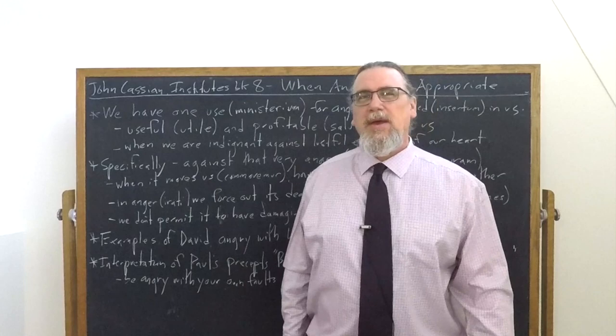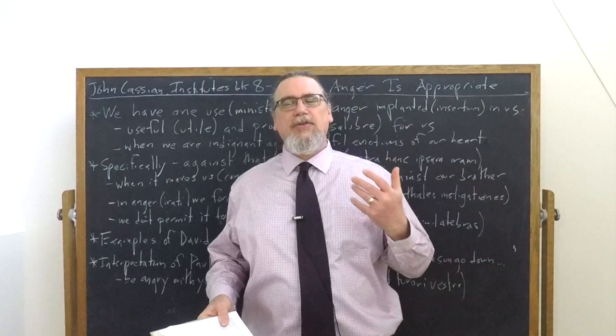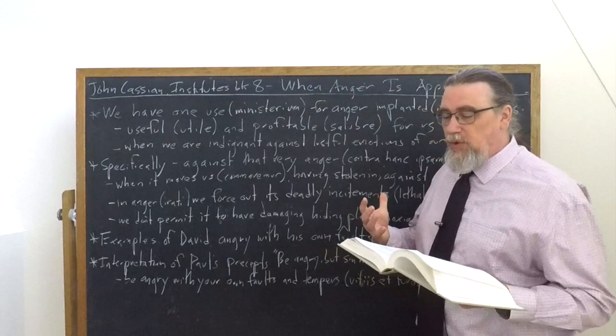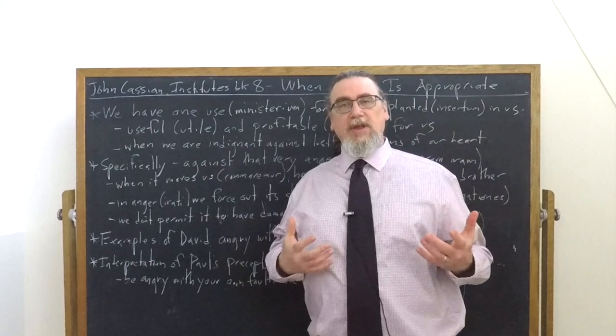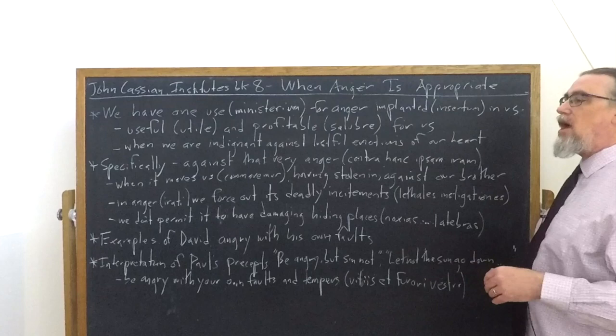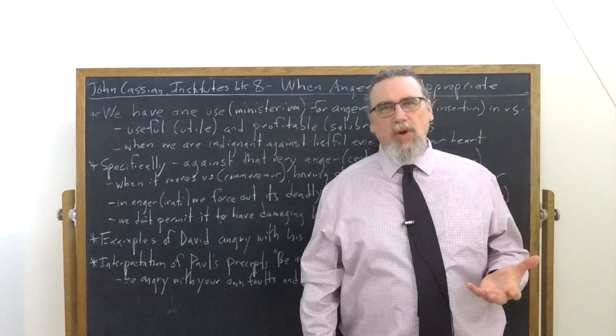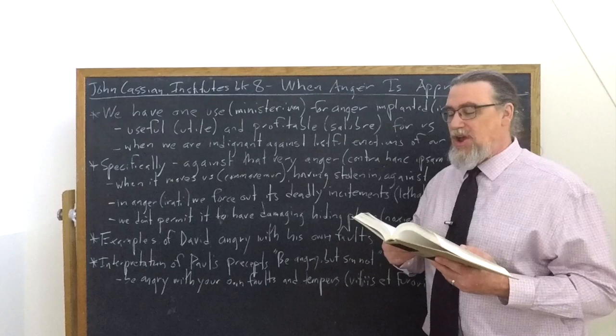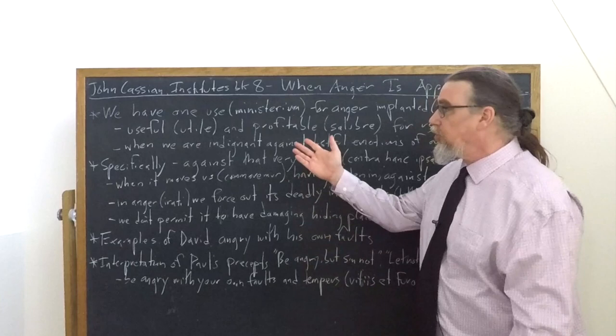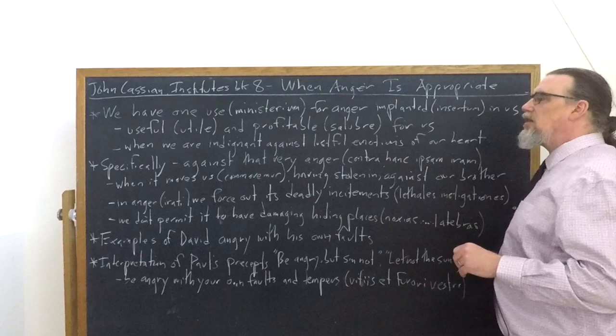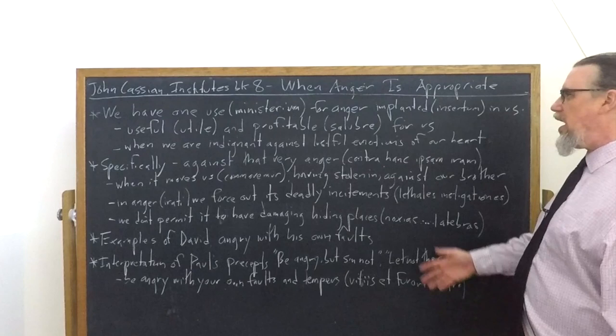So he tells us that this is excellently implanted within us, for which alone it is useful and profitable for us to admit it. So useful utility there, and profitable could also be translated as, to a certain degree, healthy, salubre, something that is good for us. So we can get angry. And what is that going to be? Well, he tells us when we are indignant and rage against the lustful emotions of our heart. So indignant is indignare. And then rage against means to like take the brakes off essentially against the lustful, the lascivious, if we want to be a little bit closer to the Latin emotions of our heart, the movements of our heart, namely the passions, the vices, the things that are getting in our way.